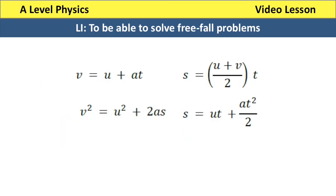A reminder from last lesson: we looked at the four equations of motion which are given to us on the formula sheet. They are shown here where V is the final speed, U is the initial speed, A is the acceleration, T is the time and S is the displacement. There's no need to learn these equations off the top of your head because they are given to you on the formula sheet in the mechanics section.